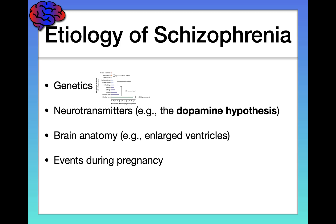And also if the mother is under extreme stress — not everyday stress, but something like the death of a loved one — that level of stress increases the risk that the child will develop schizophrenia. Finally, there's some evidence to suggest that marijuana usage is associated with schizophrenia as well, and longitudinal studies suggest that this is a causal and not just a correlational influence.